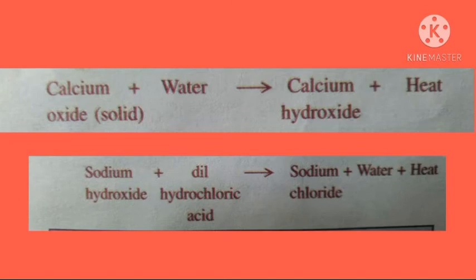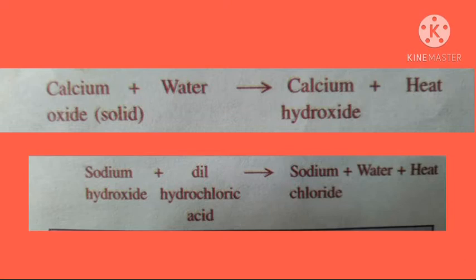Sometimes energy is also released in the form of sound and electricity. This is because every substance has a fixed amount of energy stored in it as chemical energy, and the amount of energy is different for different substances. During a chemical reaction, if the reactants have more chemical energy than the products formed, the energy is released or evolved.